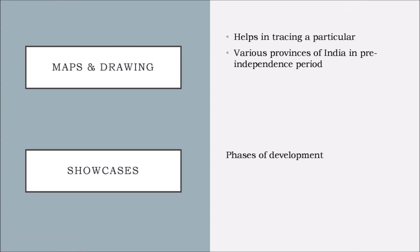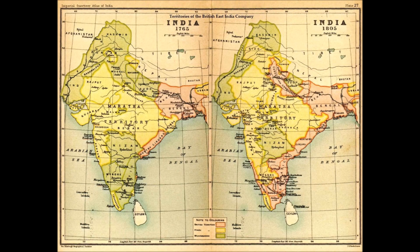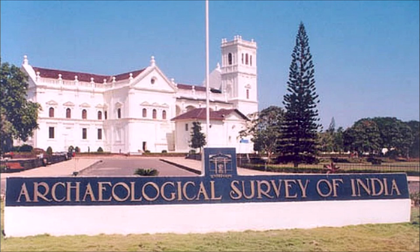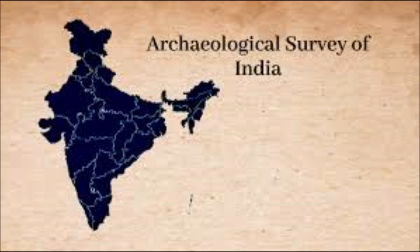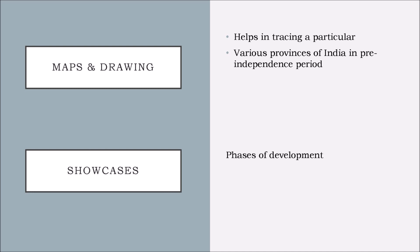We shall now see another form of written source — Maps and Drawings. Maps help in tracing a particular location. They help in finding out various provinces of India in the pre-independence period. You can see how and when the Britishers came, how they captured territories, what places were part of India before independence, and the difference after independence by studying those maps. Pre-independence maps help us in comparing these two elements. Through the scientific method of survey, the Survey of India established an independent department that designed maps through architects, which proved important from the view of studying the architecture of buildings, as well as the different phases of development that took place in the pre-independence period.